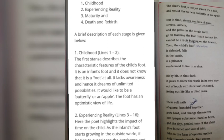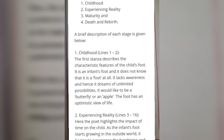Stage 1: Childhood, covering lines 1 to 2. The first stanza describes the characteristic features of the child's foot. It is an infant's foot and does not know that it is a foot at all. It lacks awareness and hence dreams of unlimited possibilities — it would like to be a butterfly or an apple. The foot has an optimistic view of life.